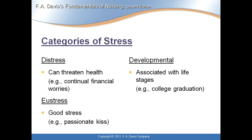There are categories of stress. The first is distress, which threatens someone's health — for example, divorce. There's eustress, which is good stress, such as marriage: preparing for a large wedding is good stress because you know there's going to be a good outcome. With distress, years of marriage not working well and getting divorced is your distress.